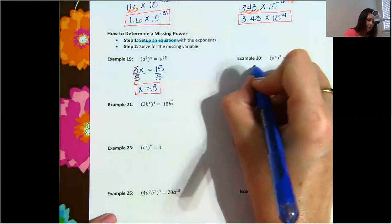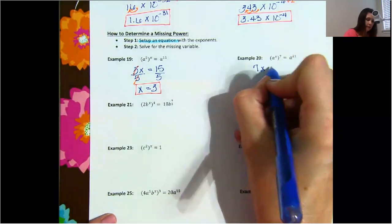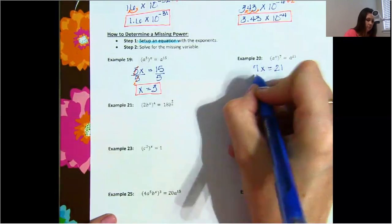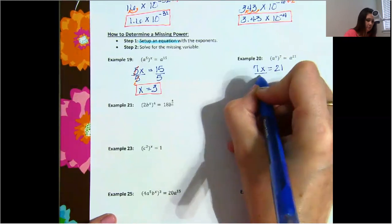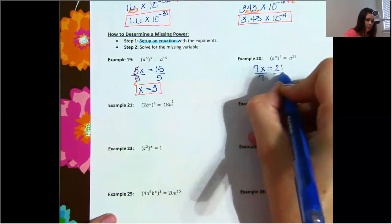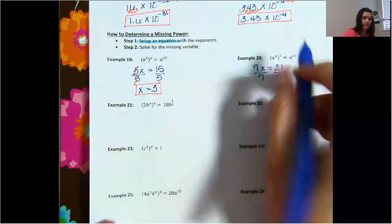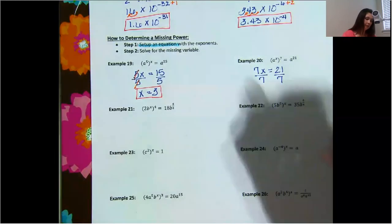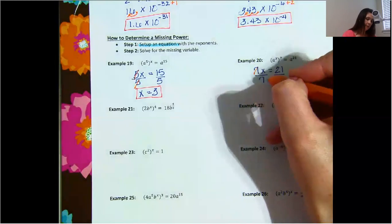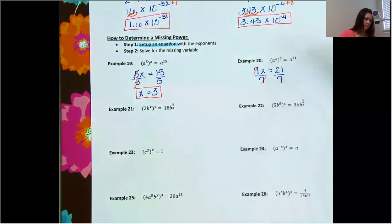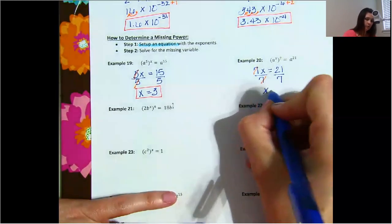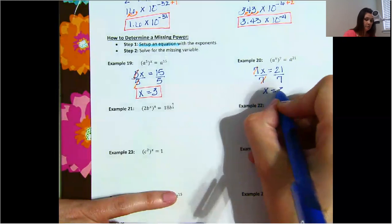Number 20 is very similar. You have 7 times x equals 21. Isolate the variable by dividing both sides by 7, and x equals 3 again.